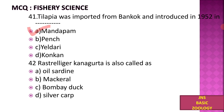Rastrelliger kanagurta, a fish species, is commonly called: A) Oil Sardine, B) Mackerel, C) Bombay Duck, D) Silver Carp. Rastrelliger is also called Mackerel fish.